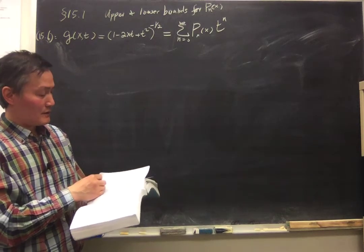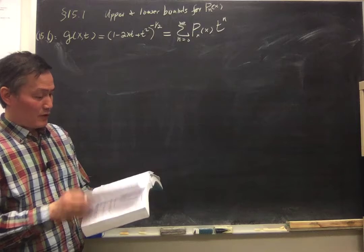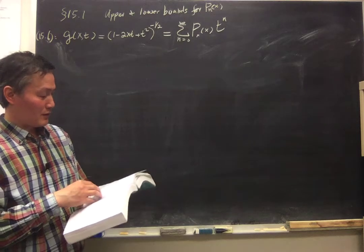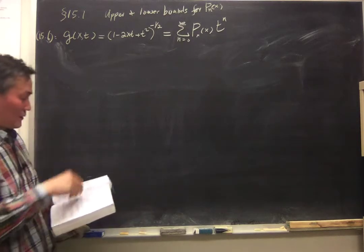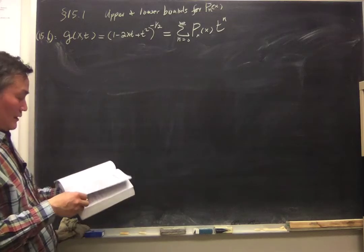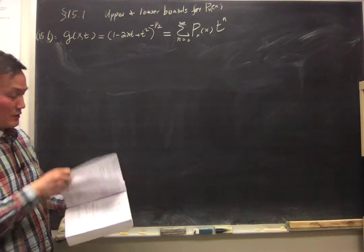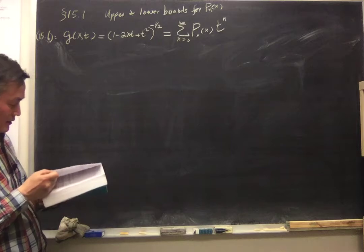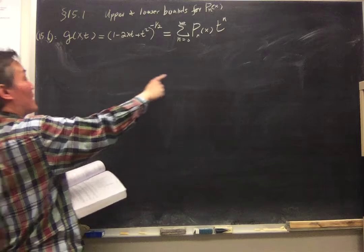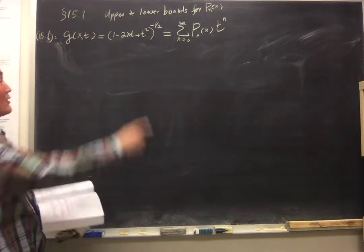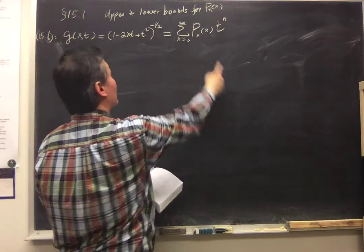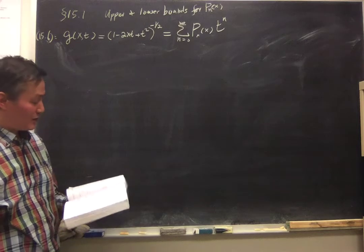We are in section 15.1. We have just finished the request formula part, and we are going to the upper and lower bounds for Pn. The starting point is the generating function, which I wrote down here as equation 15.6. This generating function expands to Pn, and the generating function has a choice of coefficient. By this choice, we define the Legendre polynomial. The Legendre polynomial is defined such that Pn at x equals 1 is 1.